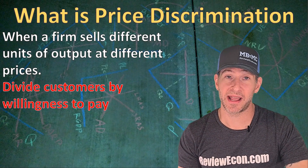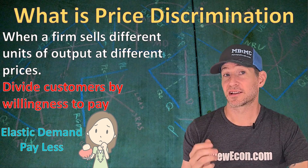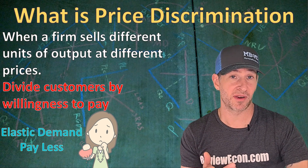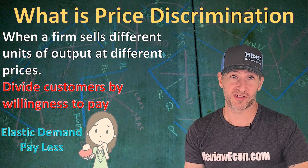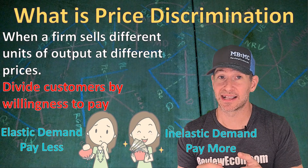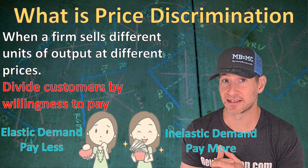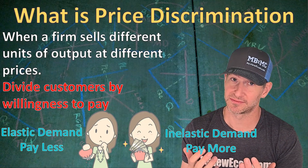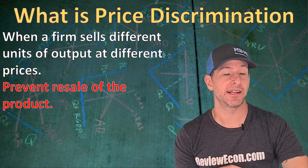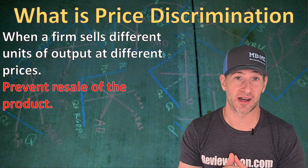A consumer's willingness to pay is equal to the elasticity of their own personal demand curve. Customers with elastic demand are more sensitive to changes in price, and as a result, firms that price discriminate will charge these customers lower prices. Customers that have an inelastic demand are less sensitive to a price change and they will be charged higher prices as a result. Another thing that is helpful for businesses that price discriminate is the ability to prevent resale of the item they are price discriminating on.